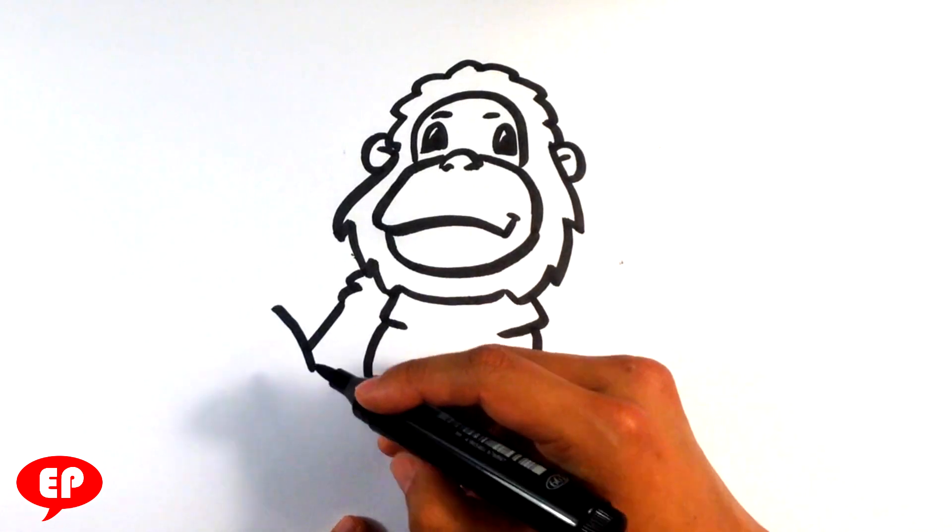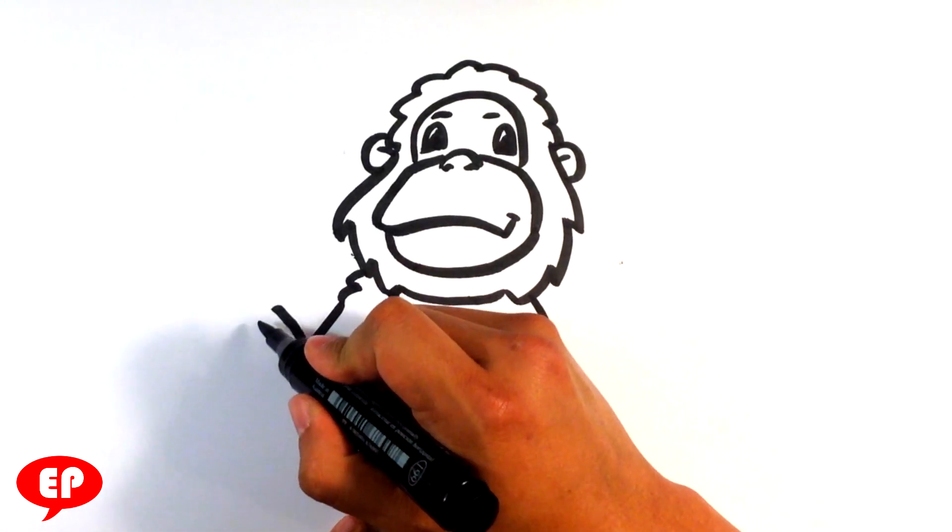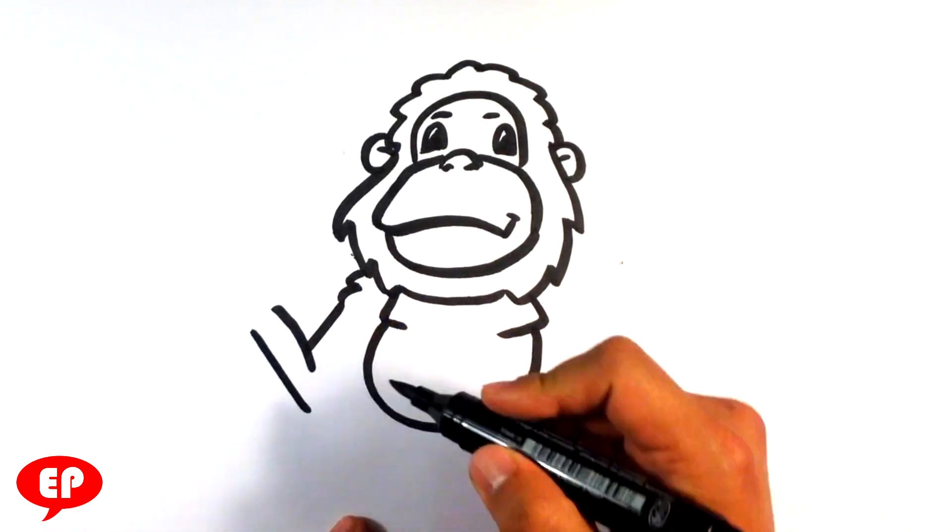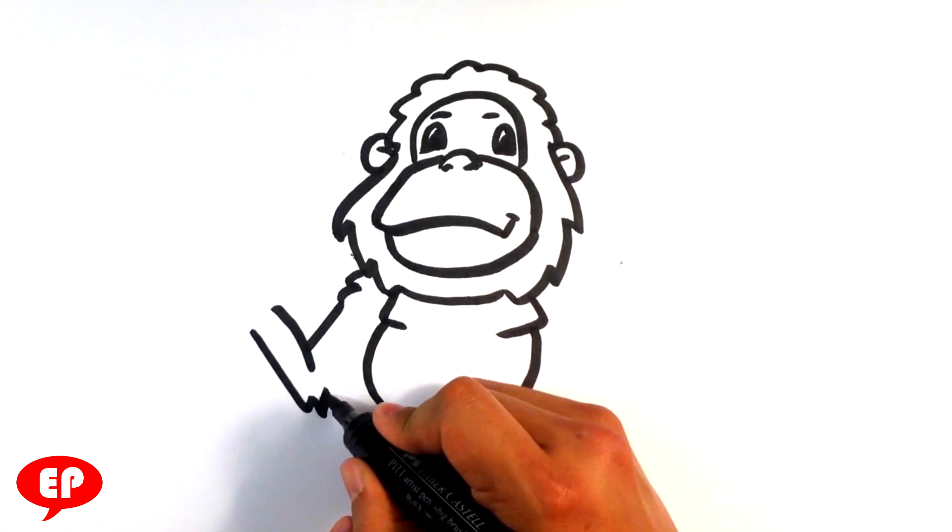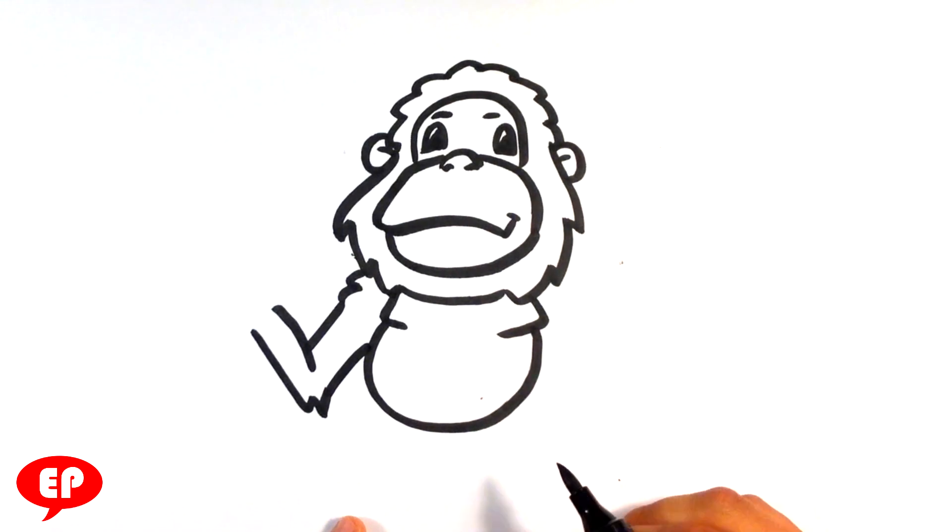That's going to be his arm folding in on itself. Kind of like that. Straight line for the other part, the outside of the arm. Elbow. Straight line for arm going that way.